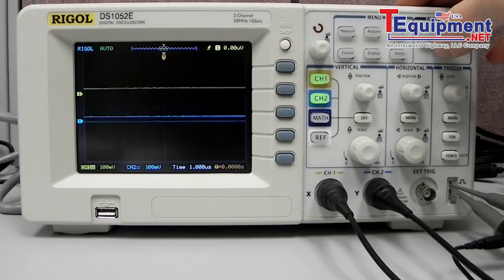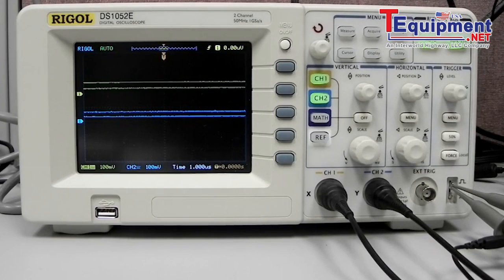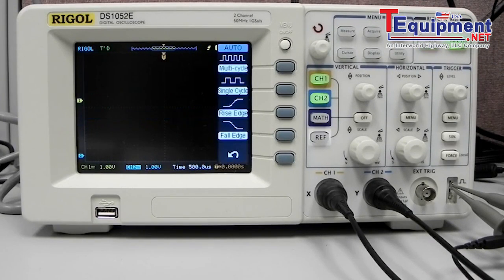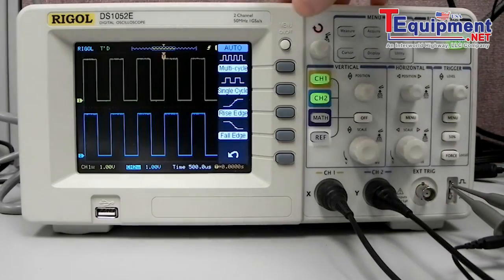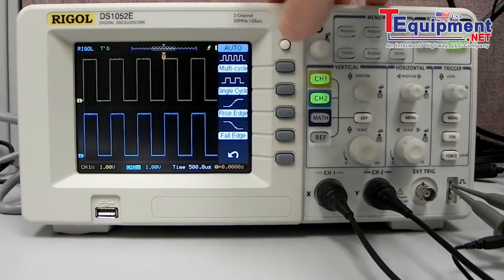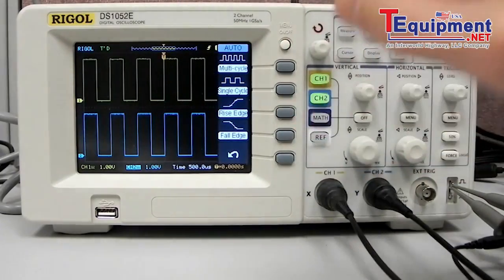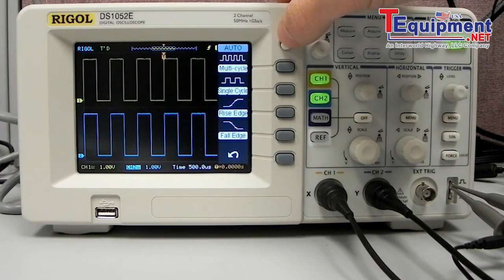What we do have is a convenient auto run feature which is going to go out and actually sense the signals on the inputs here and then it's going to make the best guess for the time scale as well as the vertical scaling for each of those signals.